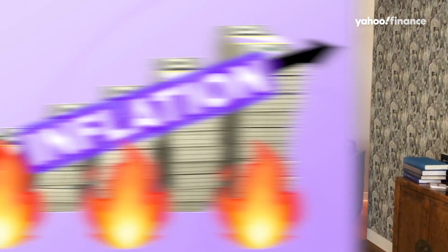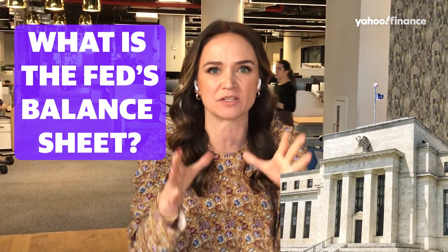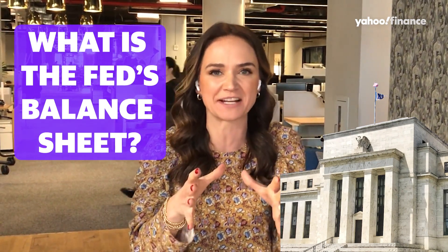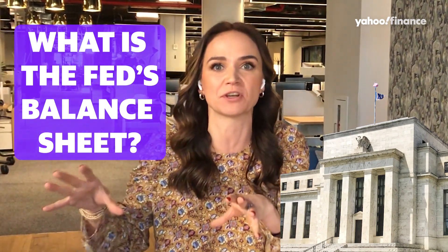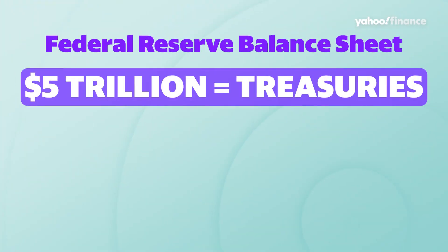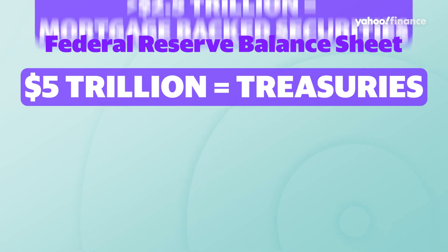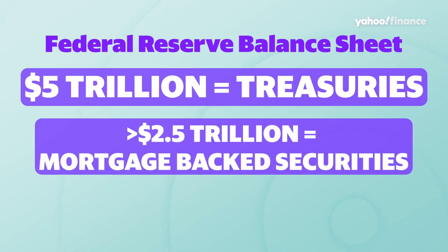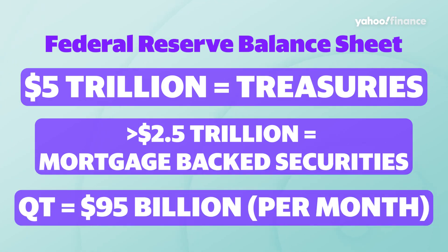It helps to understand exactly what the Fed's balance sheet is, because when you hear about securities rolling off, you might think that's a lot of money. The Fed's balance sheet stands at eight trillion dollars — five trillion of that is treasuries and more than two and a half trillion is mortgage-backed securities. Right now, QT is capped at 95 billion dollars a month.